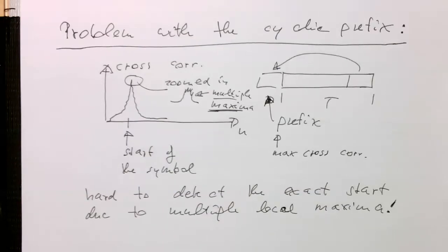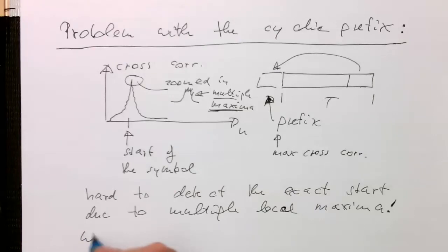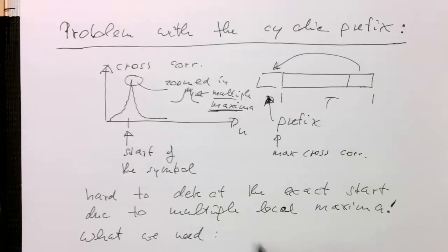So we're always having a certain uncertainty here where the actual start is. But what we need is really the exact start or the exact sample number.